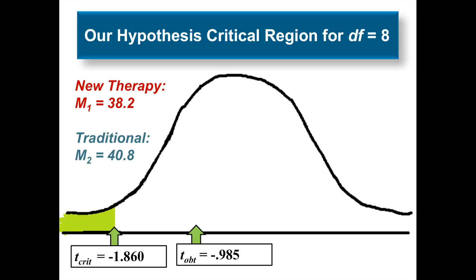This is what it looks like graphically. Again, we have the t crit as negative 1.860. So we were looking to get in that green zone or that shaded area. The new therapy did decrease depression rates, but it didn't do it at a statistically significant level. We only got to negative .985.